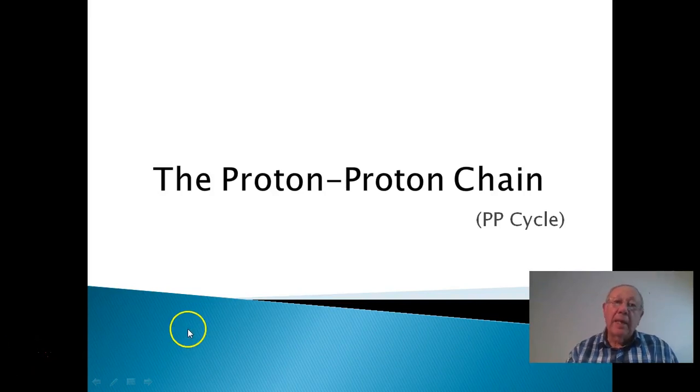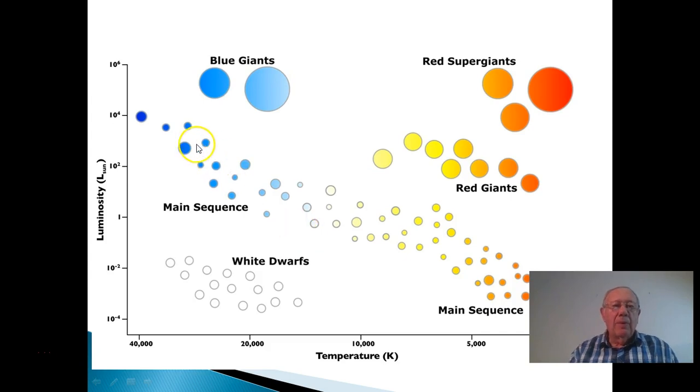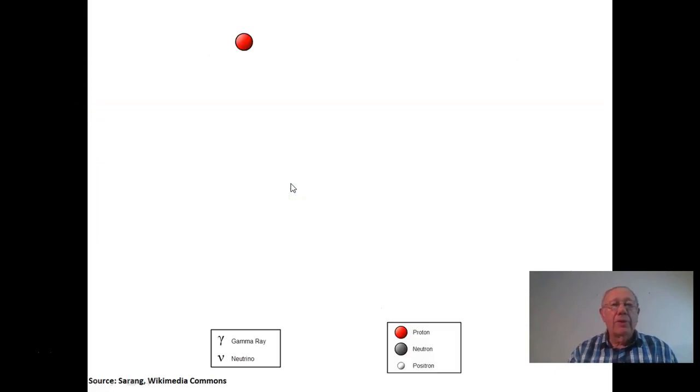Having a closer look now at the nuclear reaction that takes place in main sequence stars. Here, as we saw before, we've got most of the stars, and the kind of reaction that gives out most of the energy or that occurs a lot of the time is the combination of the hydrogen nuclei with each other.